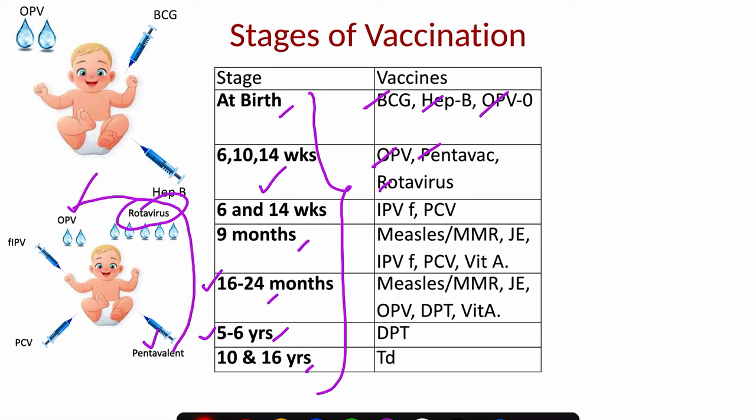The group of vaccines given at 6 and 14 weeks also includes fractional IPV and pneumococcal conjugate vaccine. These 2 vaccines have their booster dose given at 9 months.